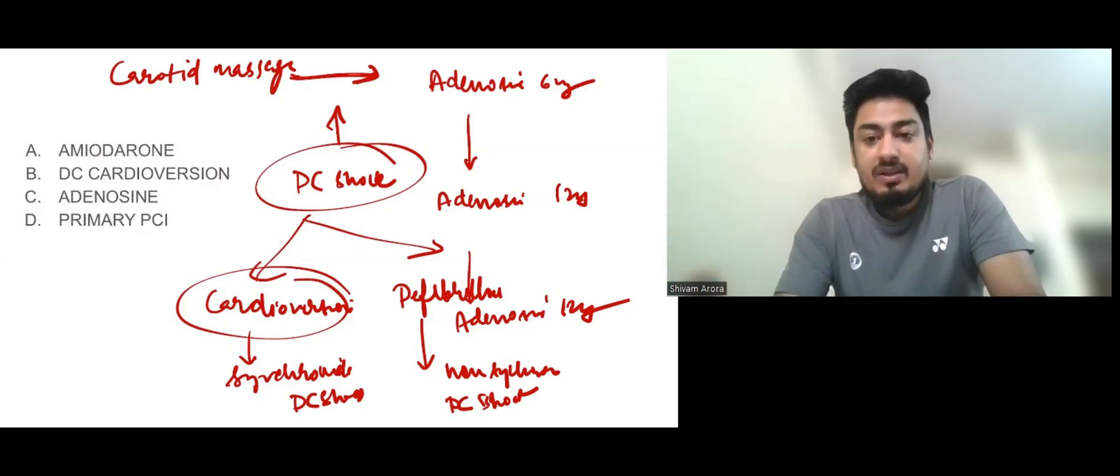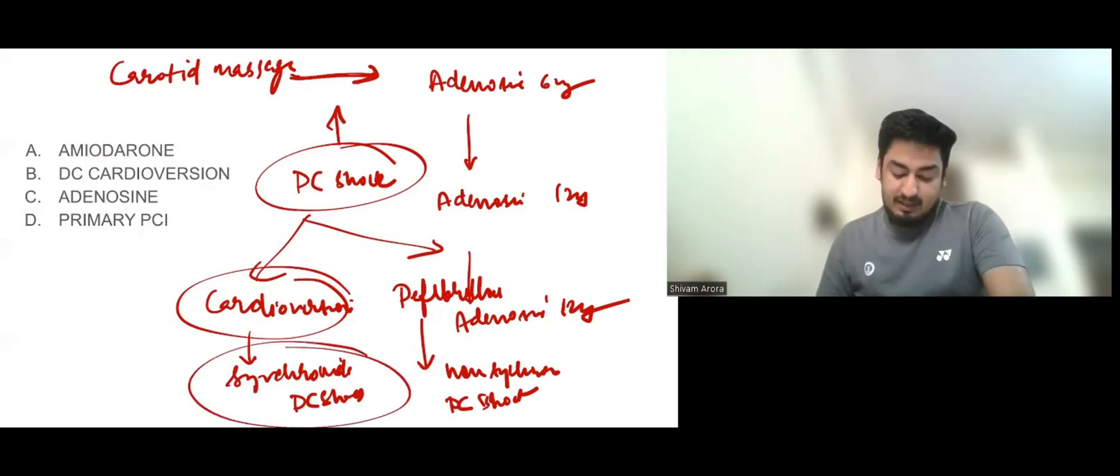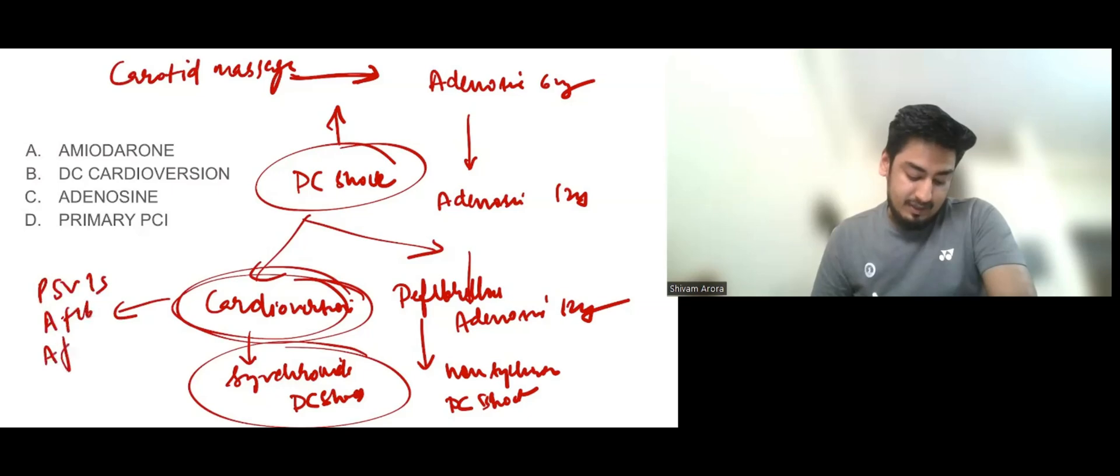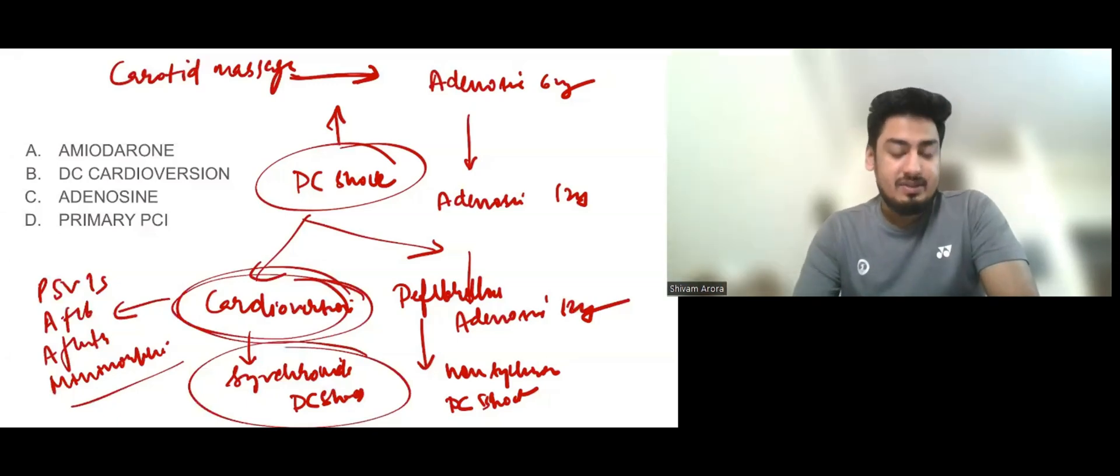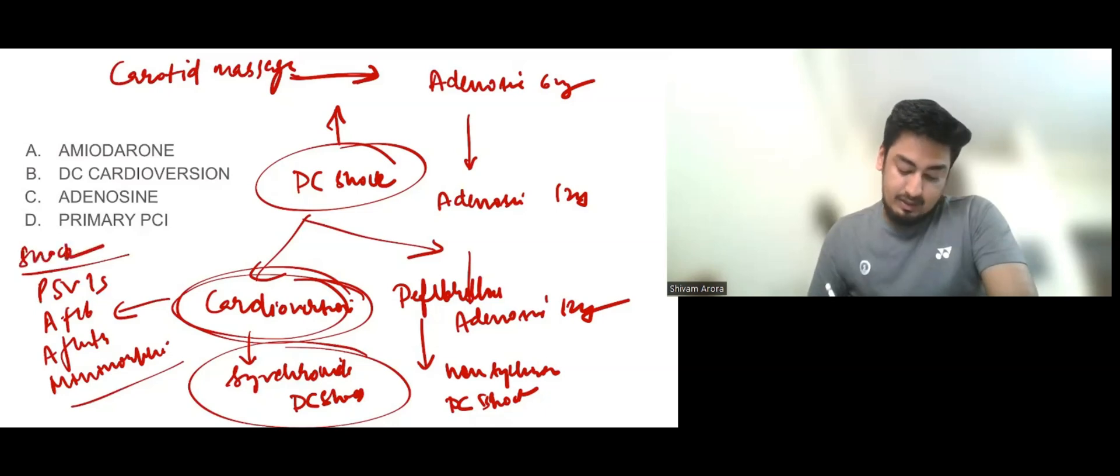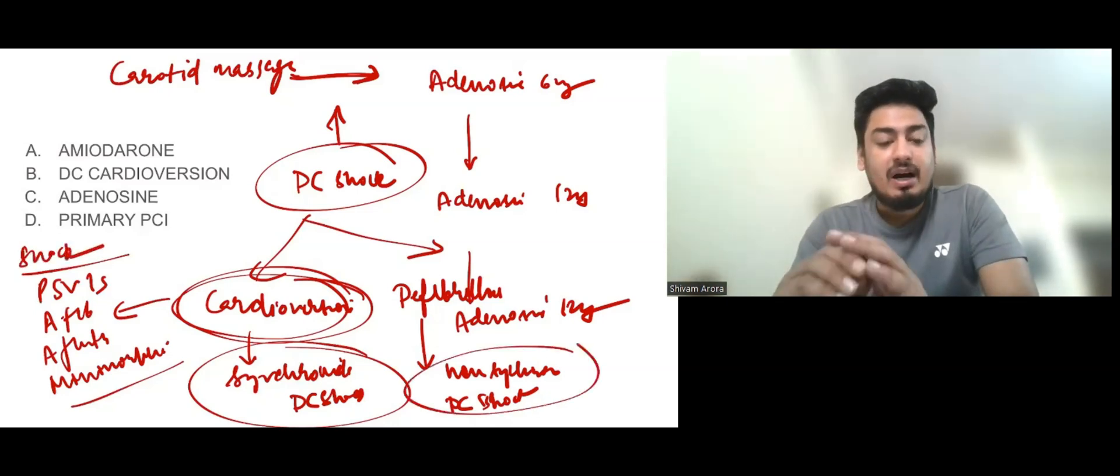Synchronized cardioversion means you can see the R wave. When can you see the R wave? When you can see AF and PSVT, even monomorphic VT. So synchronized DC cardioversion is used in PSVTs, atrial fibrillation, atrial flutter, or monomorphic VT. In all of these, R waves are visible, provided patients are in shock.